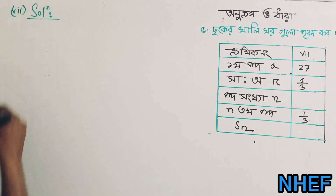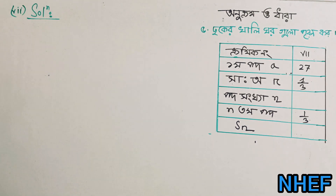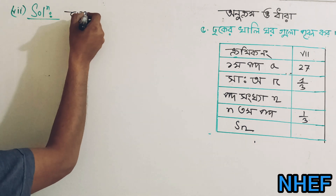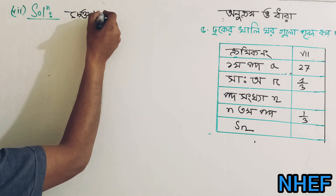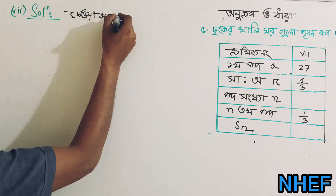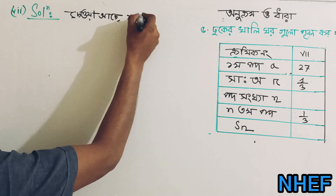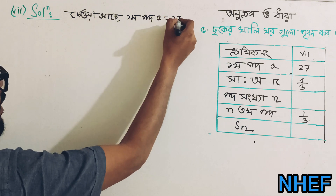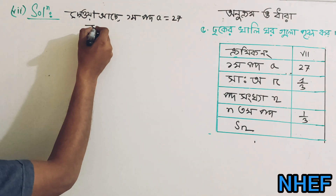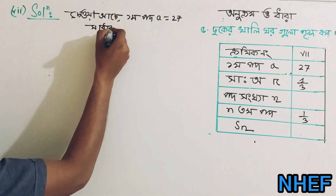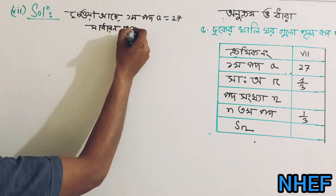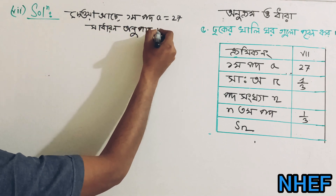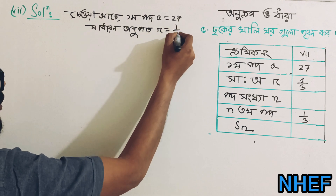Aik doom — very interesting actor mathematics. Baccha, the given data: first term a is equal to 27. Common ratio (shadharon unupat) r is equal to 1 divided by 3.